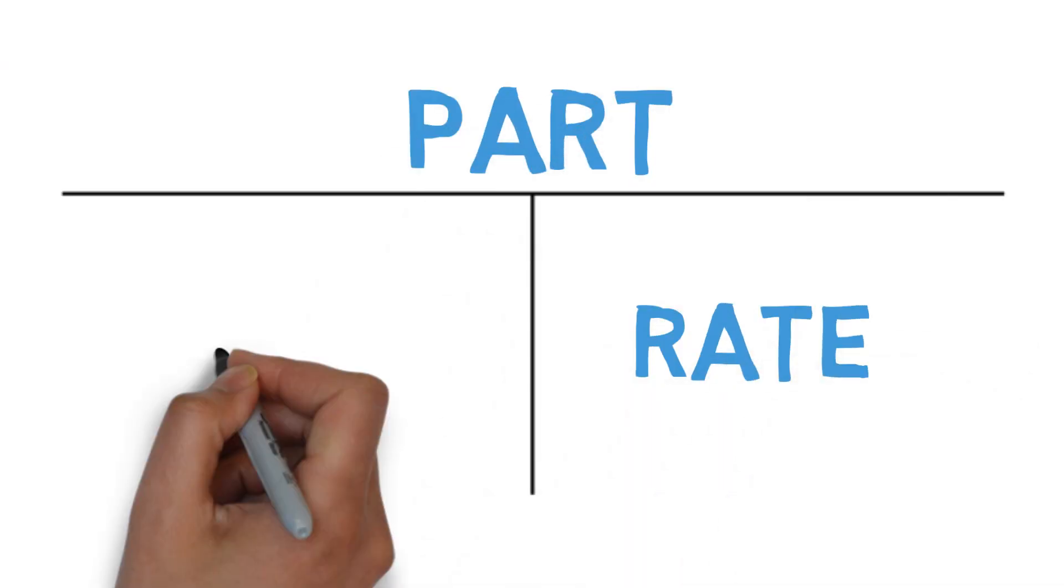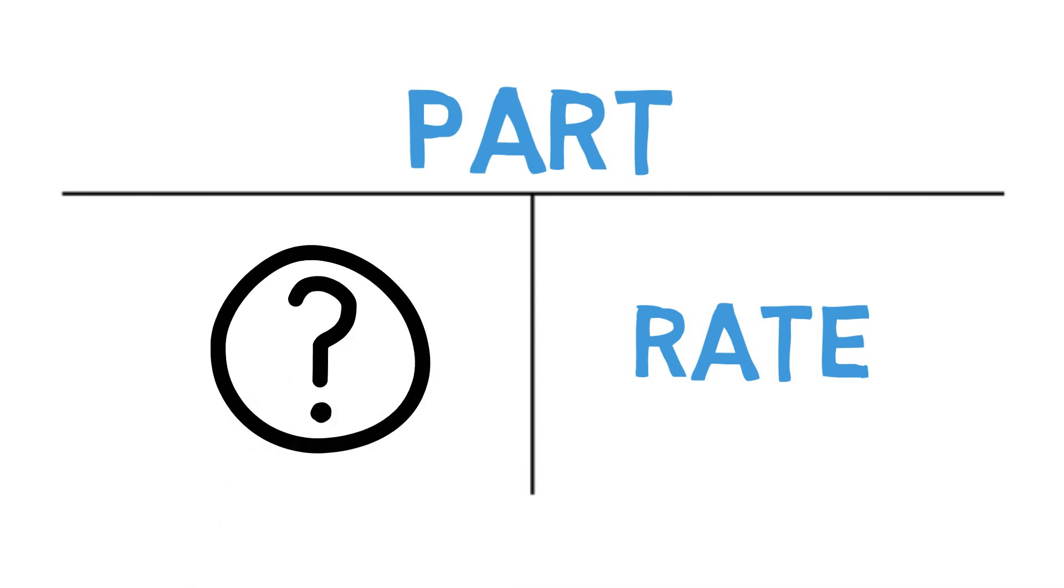Our last illustration is where in a math problem, they might give you the part and the rate and ask for the whole. In this case, our two known variables are separated by our horizontal line, which tells us to divide. So we'll take the top and divide by the bottom, part divided by rate.